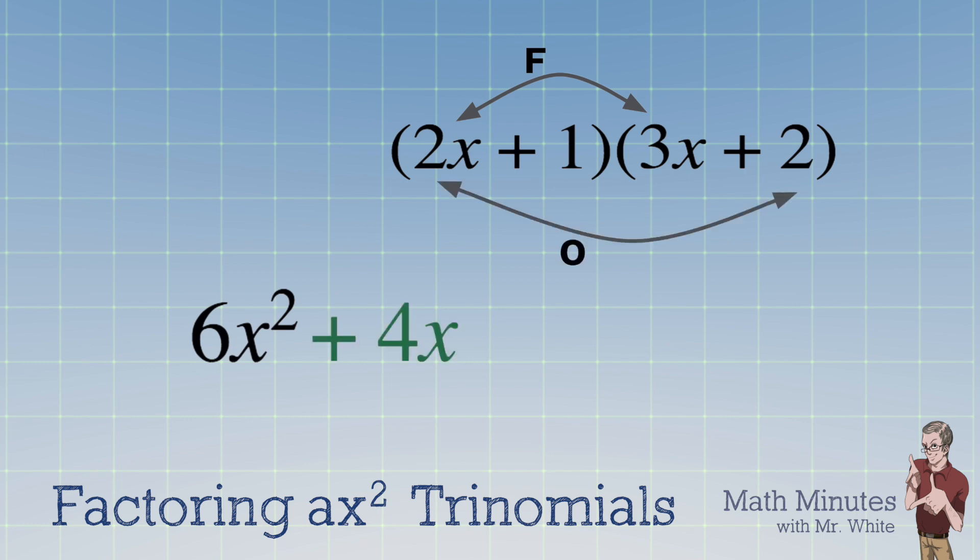The first terms get multiplied, and 2x times 3x, of course, is 6x squared. The outside terms, 2x times 2, those multiply to be 4x. And then you have the inside terms, 3x times 1, and of course, that's 3x.